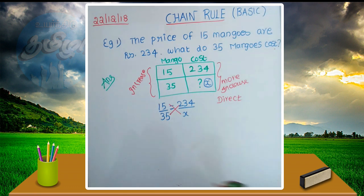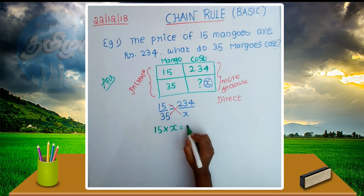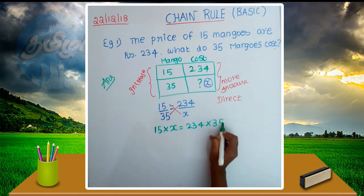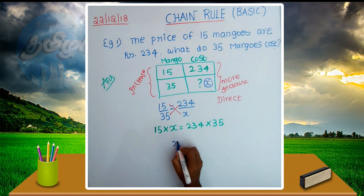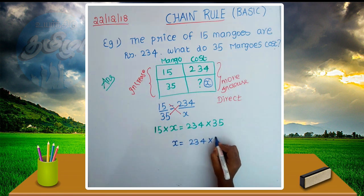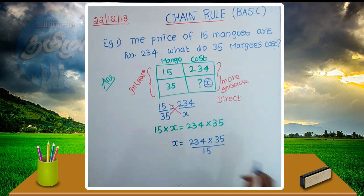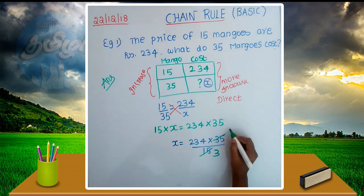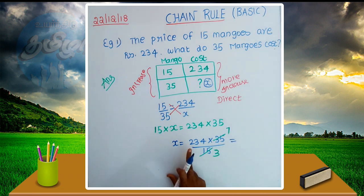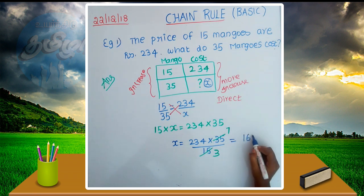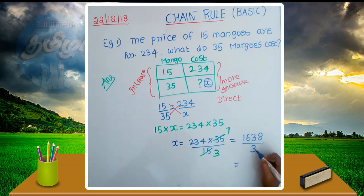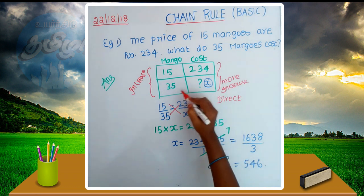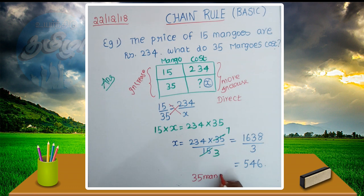How do we solve direct proportion? 15 into x is equal to 234 into 35. So x is equal to 234 into 35 divided by 15. If we cancel this in 5 tables and then in 3 tables, we get 234 into 7, which equals 1638, then divide by 3 to get 546. The cost of 35 mangos is equal to 546.